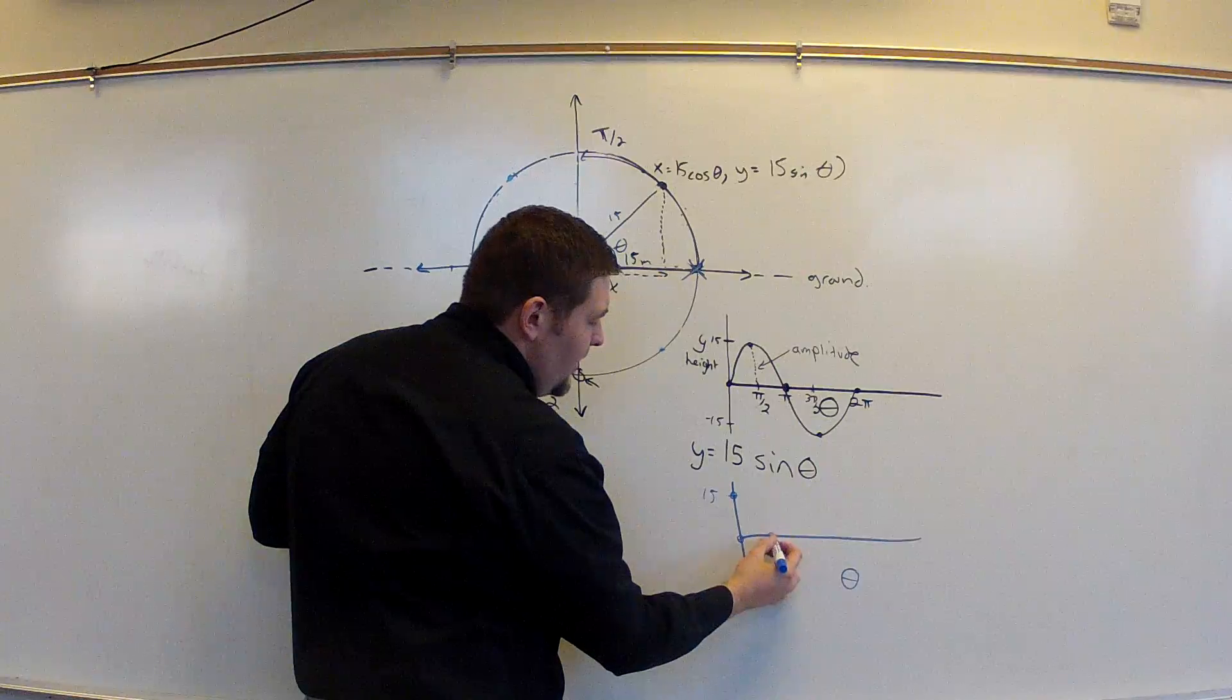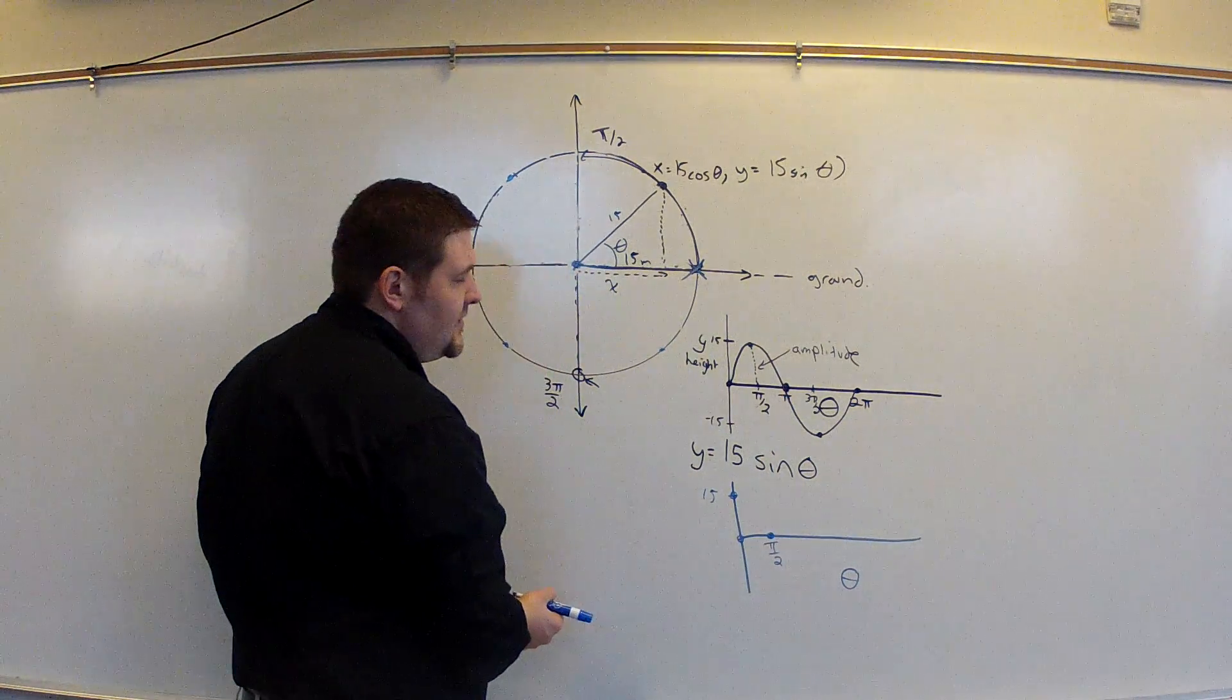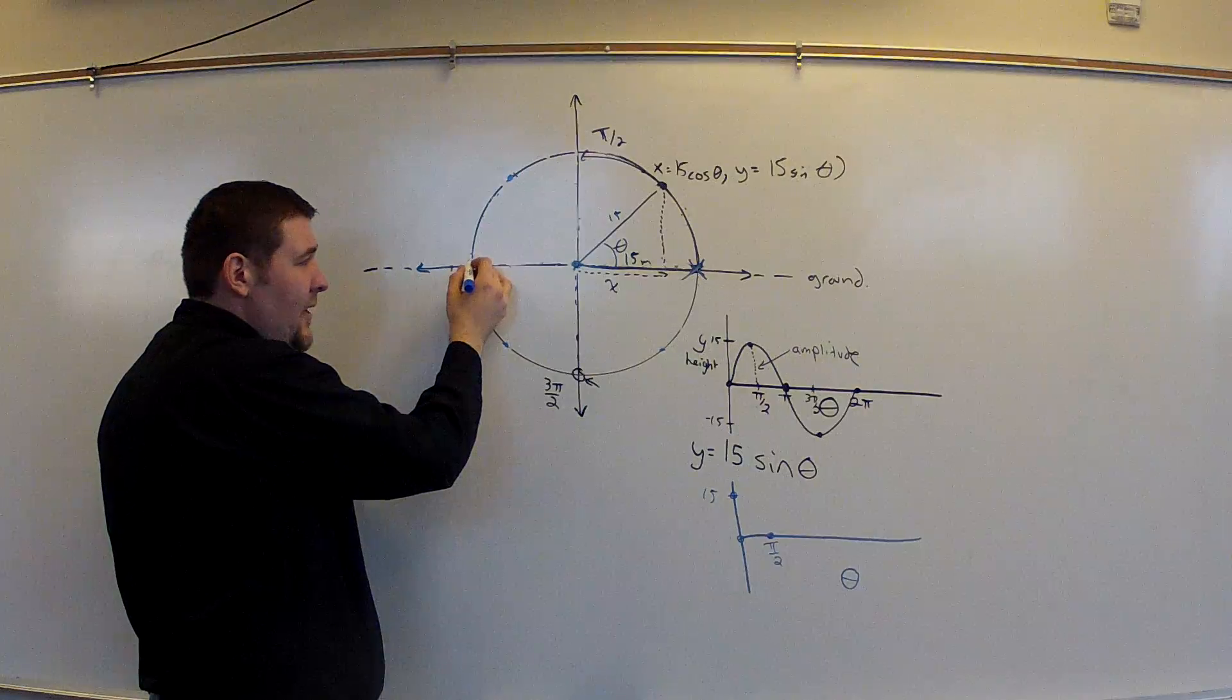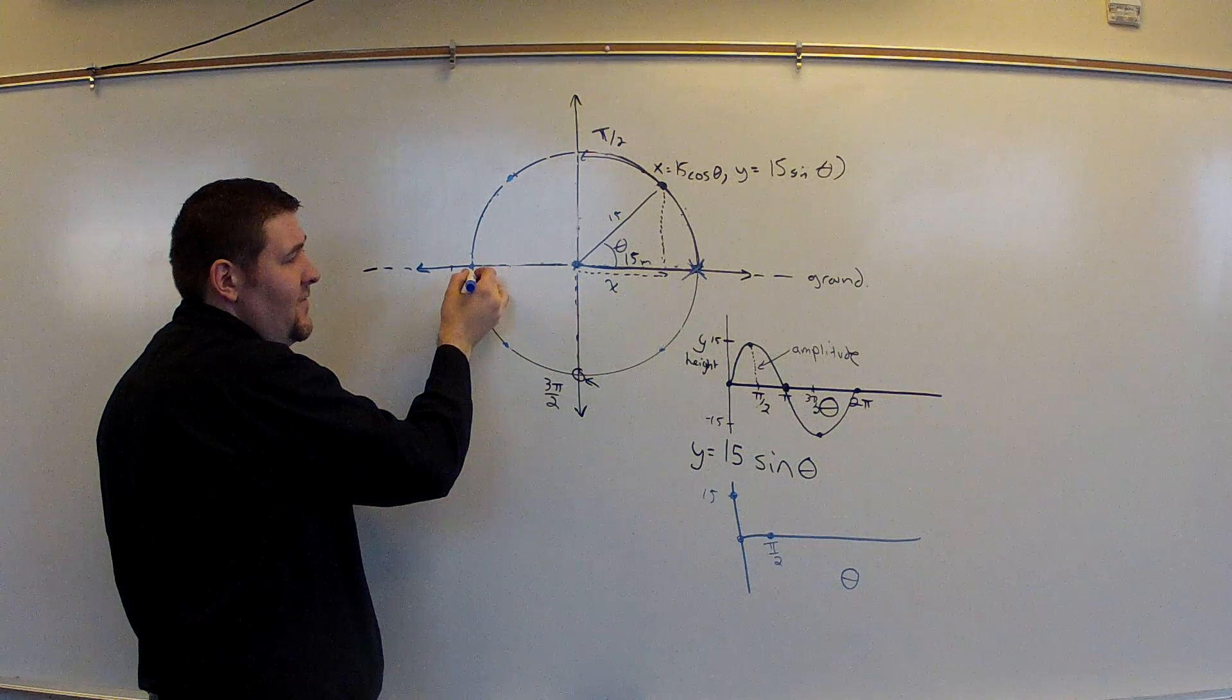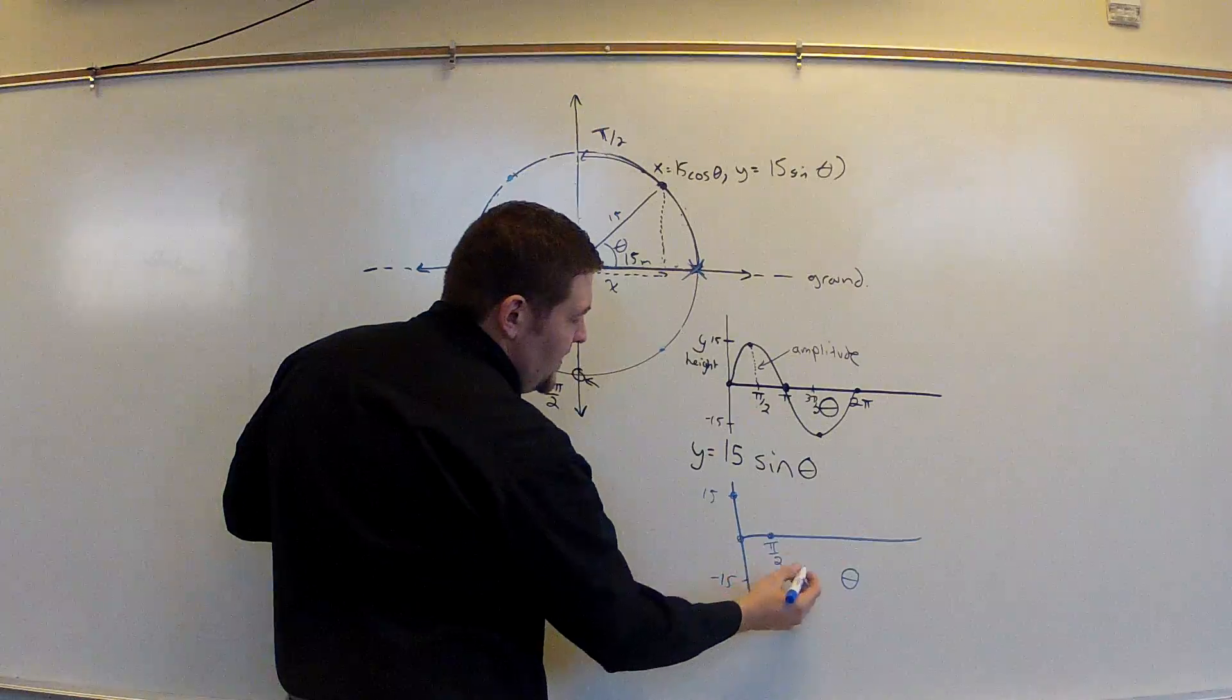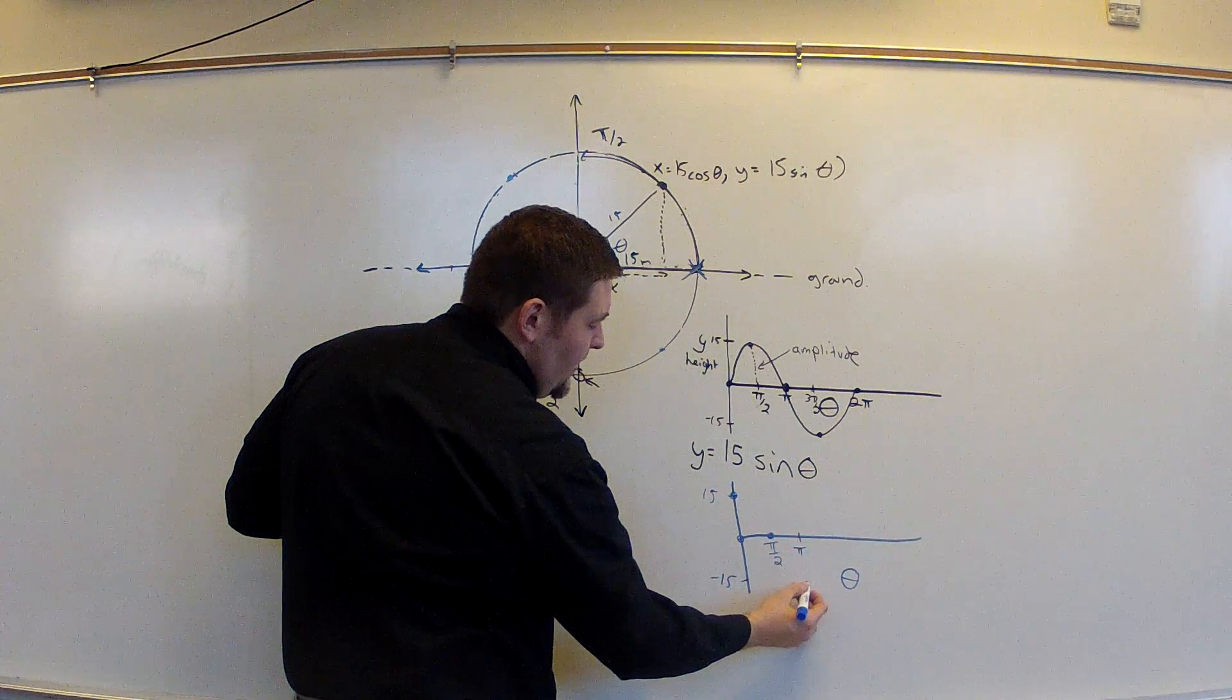So at pi over 2, I would be located at zero horizontal distance. And then if I come down here to 180 degrees or pi radians, I'd be at a full negative horizontal distance away. That'd be at a full negative 15. And so at pi, I would have a negative 15.